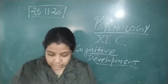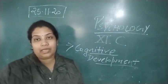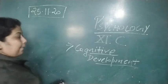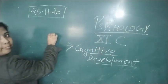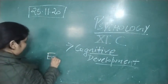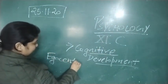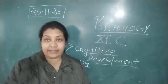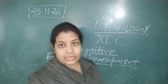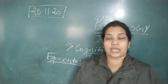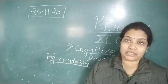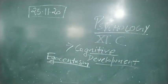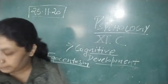Adolescents also develop a special kind of egocentrism in this stage. Psychologist David Elkind gave two concepts related to adolescent egocentrism: imaginary audience and personal fable.